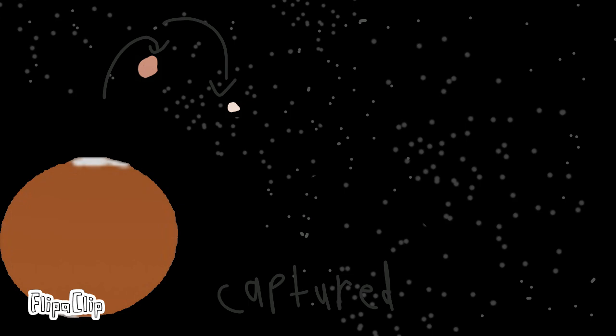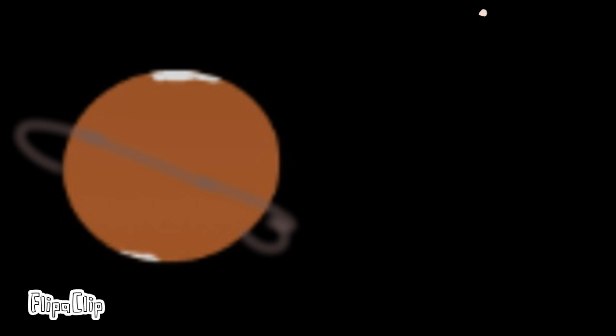Some scientists believe that Phobos and Deimos may be captured asteroids. Sadly, in a couple million years, Phobos is going to crash into Mars and become rings, and Deimos is going to escape Mars's gravitational pull, and Mars will be left with no moons.